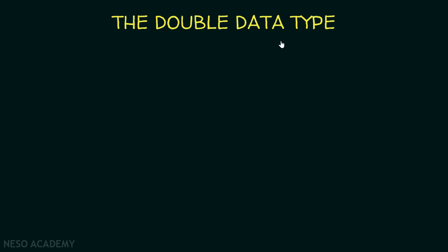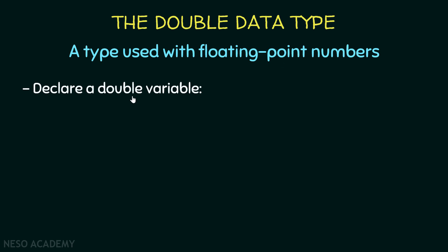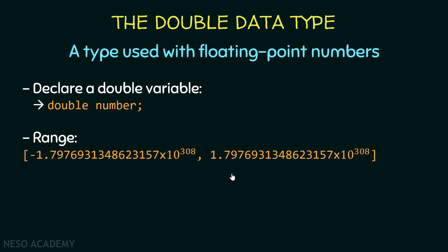Now let's talk about the double data type in Java. It is a type used with floating point numbers. To declare a double variable we do something like this: the type is double and we call the variable 'number'. All the numbers inside this interval can be stored in a double variable, and as you can see this is a very huge range.